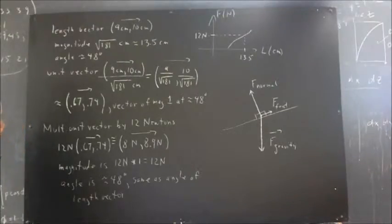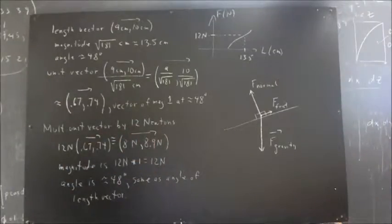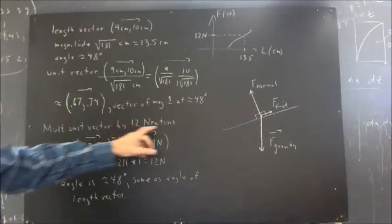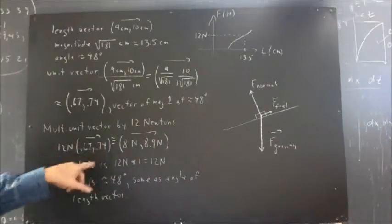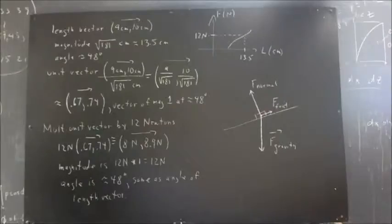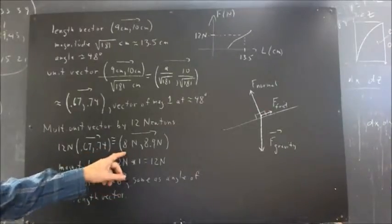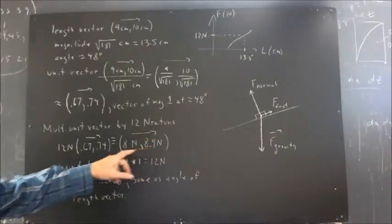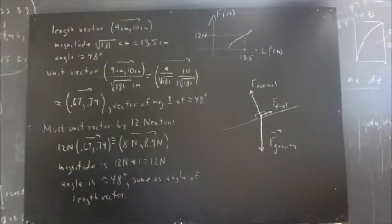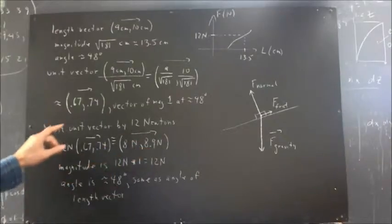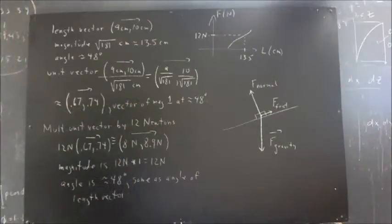Now, we multiply this unit vector by 12 newtons. So if we multiply the unit vector by 12 newtons, what do we get? We get 12 newtons times the vector 0.67, 0.74. And that gives us approximately 8 newtons as the x component and the y component, 8.9 newtons. So the unit vector here multiplied by 12 newtons gives us this vector here.